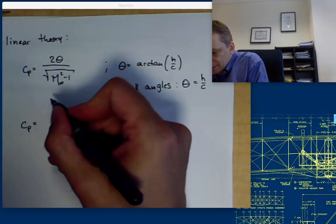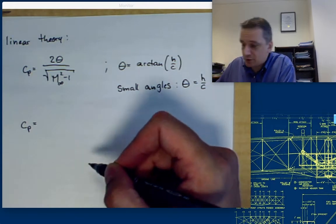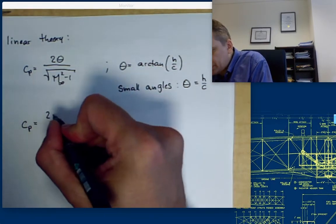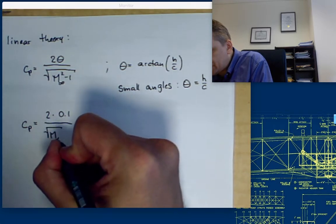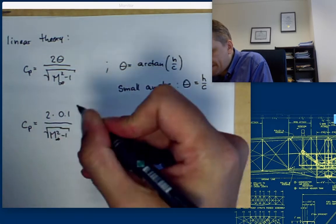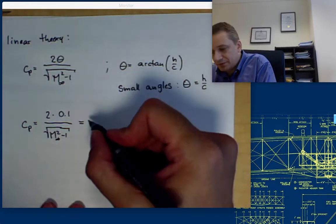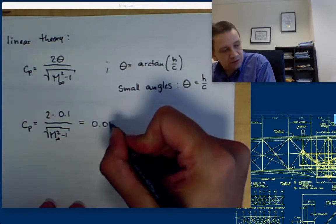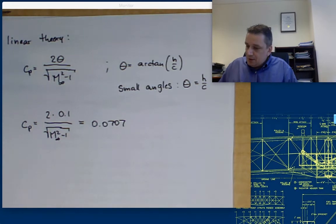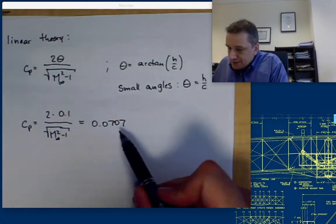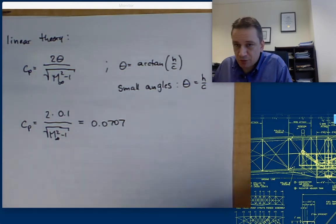Cp is going to be then — for the first part we have a compression, so the Cp is going to be positive. Theta is going to be positive: 2 times 0.1 over the square root of M infinity squared minus 1. That is going to be 0.0707.